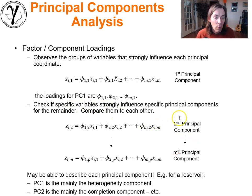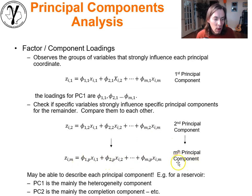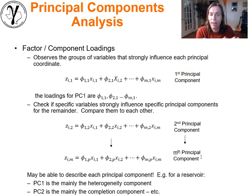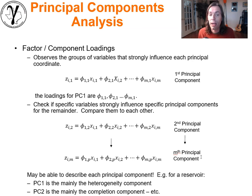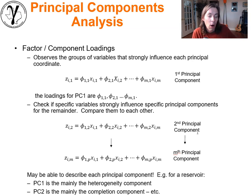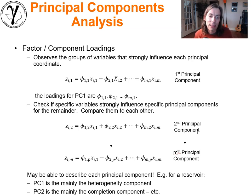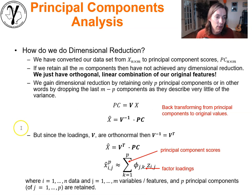We may find that the combination of features feeding into principal component one are all related — for instance, heterogeneity components of the reservoir. Principal component two, orthogonal to the first, might describe variance related to completion information. People often do this interpretive analysis on the principal components themselves — it's very powerful.